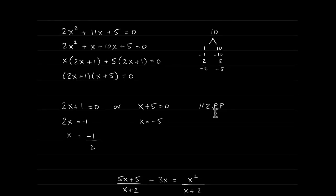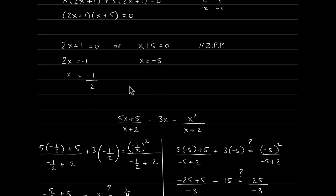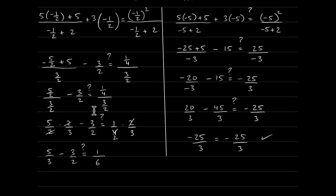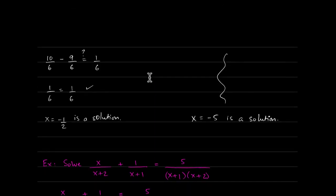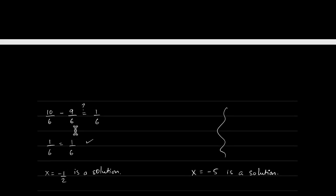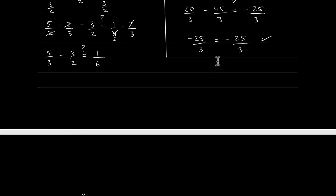Using the zero product property, we set 2x plus 1 equal to 0 and x plus 5 equal to 0, giving x equals negative one-half and x equals negative 5. These are potential solutions, so we plug them in. For x equals negative one-half we get one-sixth equals one-sixth, and for x equals negative 5 we get negative 25 over 3 equals negative 25 over 3 — both are solutions.